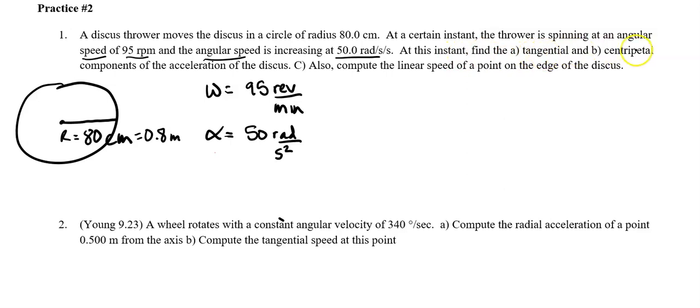So angular speed, that's going to be 95 revs per minute, and the speed is increasing. That's our angular acceleration, 50 radians per second squared. At this instance, find the tangential and centripetal components of acceleration of the disk. And then C also contains the linear speed of a point on edge of the disk. So again, we already talked about we're going to need for these equations like x equals r theta, v equals r omega, and then our last one, a equals r alpha, we need all of our angular units to be an angular quantity. So let's convert those first.